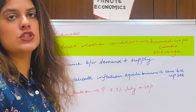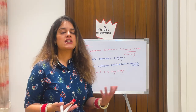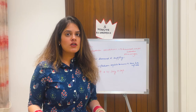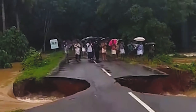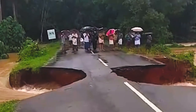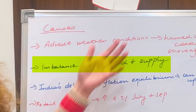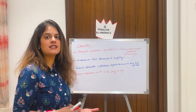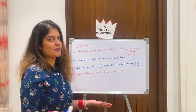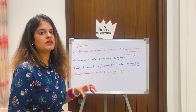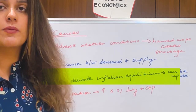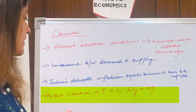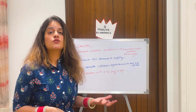Adverse weather conditions are a key cause. Our country is facing floods and excessive rain due to global warming — in places that have seen very little rain in years, we've now seen heavy flooding, which harms crops and creates a shortage. This imbalance between demand and supply pushes prices up. Tomato inflation can also disturb India's delicate inflation equilibrium: retail inflation in July and September is expected to rise to 5.5% because of food inflation from essential goods like onions, tomatoes, and lemons.